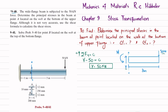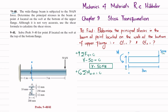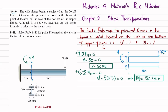Now we find the moment. Applying the sum of moments about section AA equal to zero, taking counterclockwise as positive: M minus 50 times 3 equals zero. So M equals 150 kN·m. At the section we have a shear force V acting upward and a counterclockwise moment.